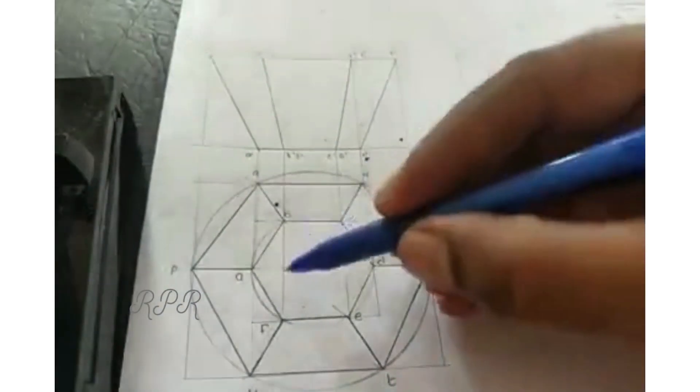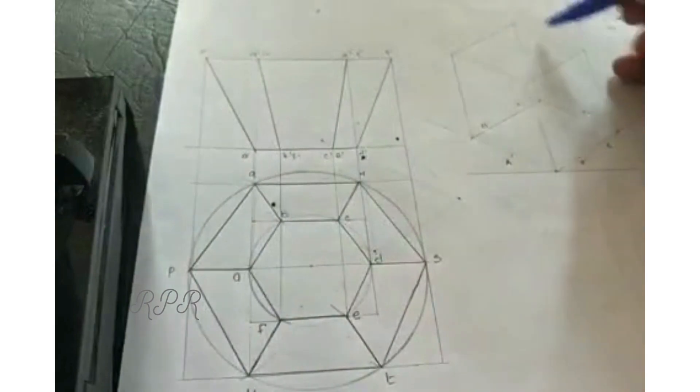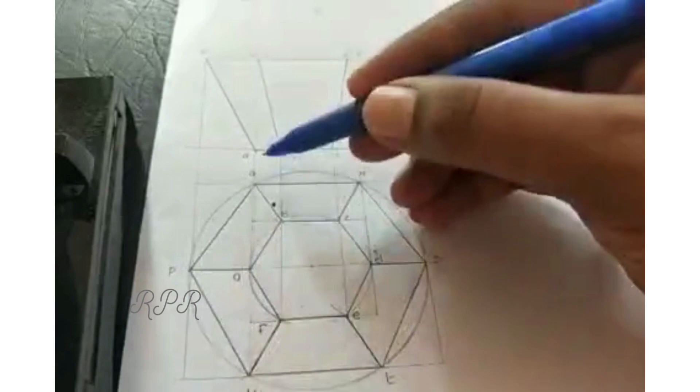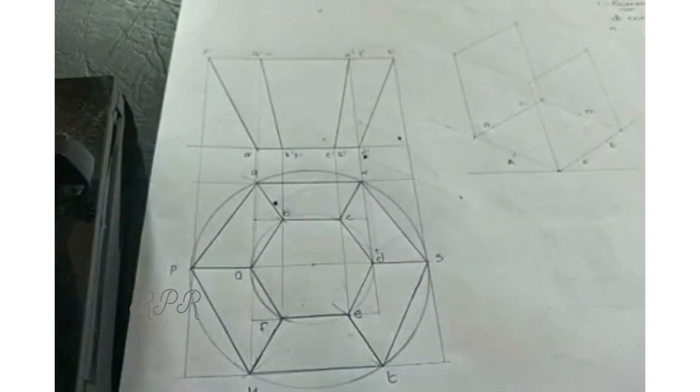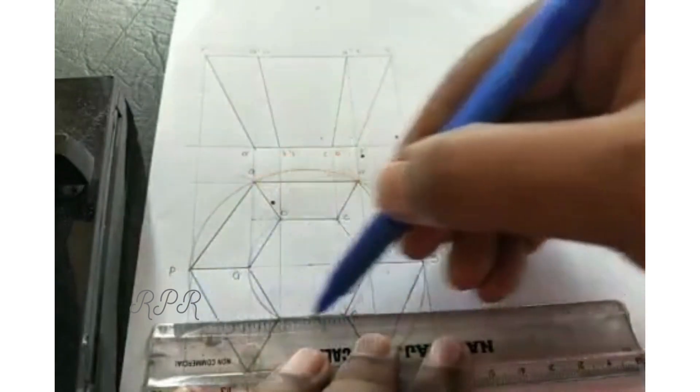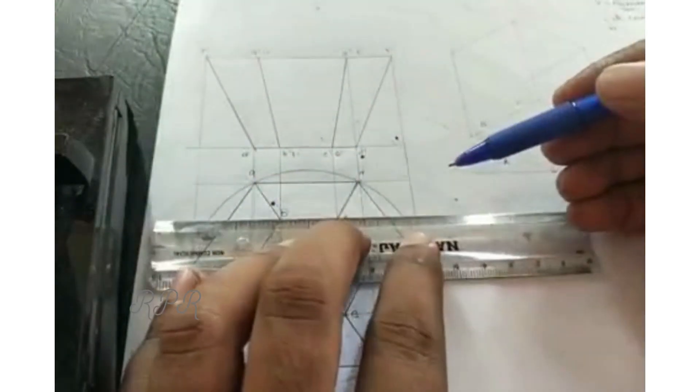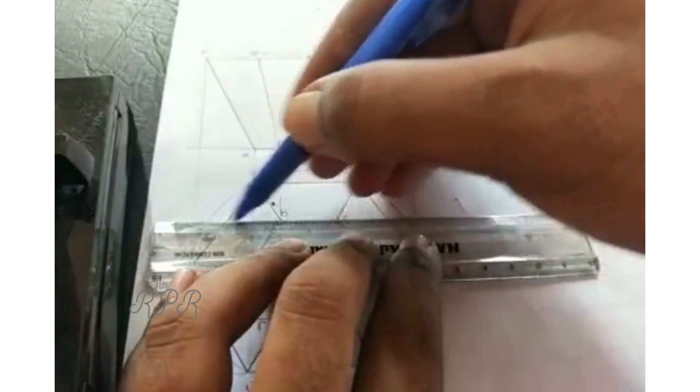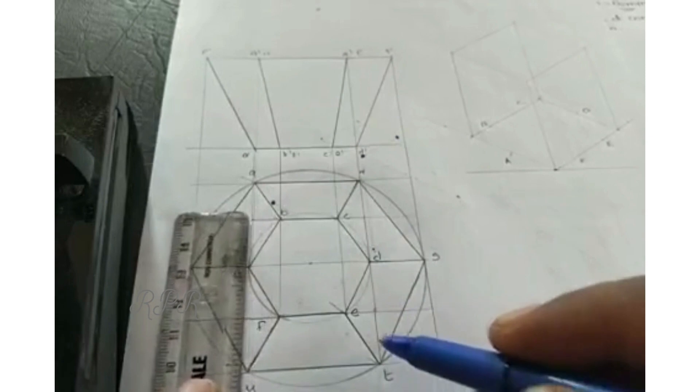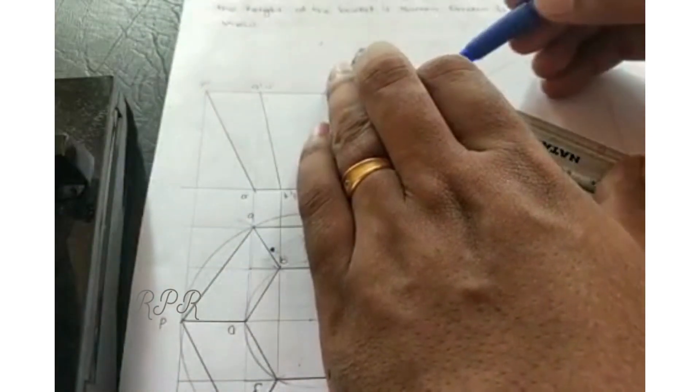We have got a smaller rectangle here. We have to draw the larger one to get the larger hexagon. Then we will extend all the sides of the smaller rectangle. Same thing we will do here.